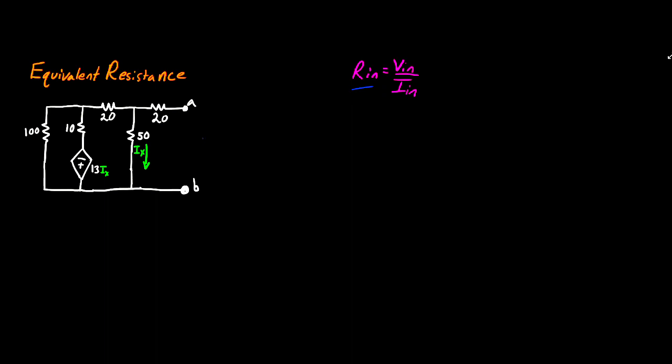So for this problem, in order to find the resistance seen between A and B, we're going to connect a voltage source, and I'm going to give it a value of 1 volt. Now the value that you choose is completely arbitrary, because whatever value of voltage you choose, the value of current that you get is going to work out such that that ratio is going to remain the same.